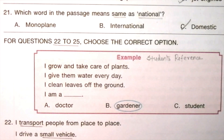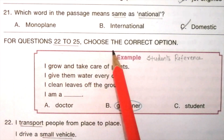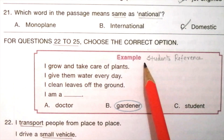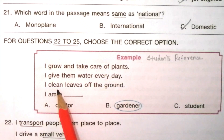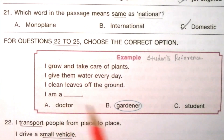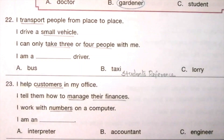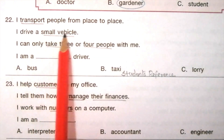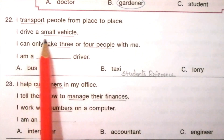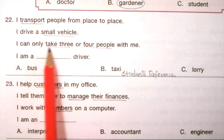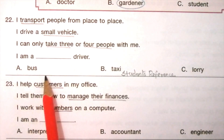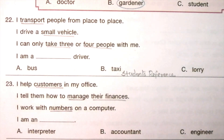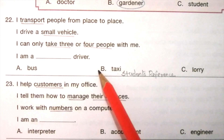For questions 22 to 25, choose the correct option. Example: I grow and take care of plants. I give them water every day. I clean leaves off the ground. I am a gardener. Question 22: I transport people from place to place. I drive a small vehicle. I can only take 3 or 4 people with me. I am a ___ driver. Options: bus, taxi, lorry. The answer is B: taxi.